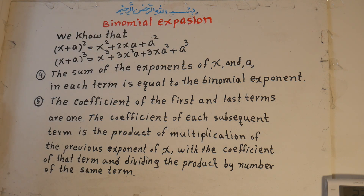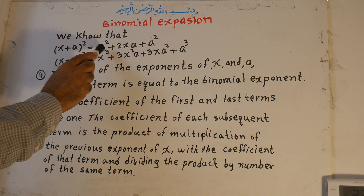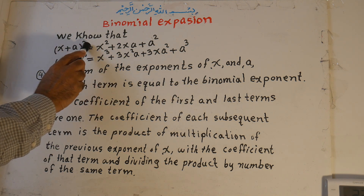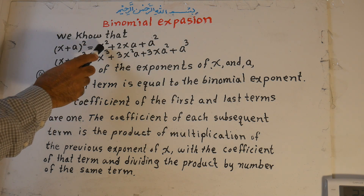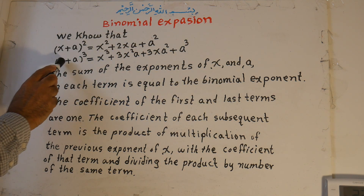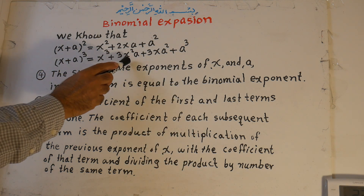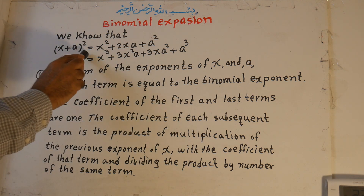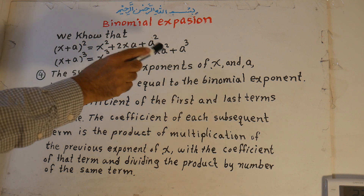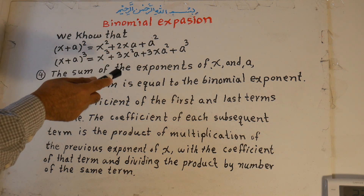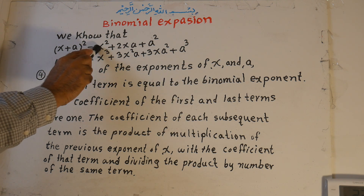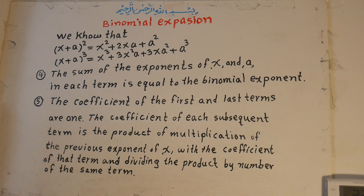And the coefficient of the first and last term is 1. The sum of the exponents in each term equals the exponent of the binomial: 2, and 1+1 is 2, and 2; here 3, and 2+1 is 3, and 1+2 is 3, and 3. The coefficient of the first and last term is 1, and the coefficient of each following term is the previous exponent of x times the coefficient of that term, divided by the number of that term.